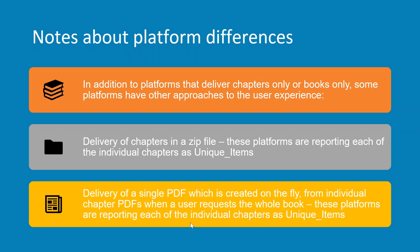Are there any other questions? Just another point on that comparability: when publishers are providing the Release 5 reports, over time that issue will go away, because we have the attributes in there and the unique title metric — so that is an issue which would not occur again.